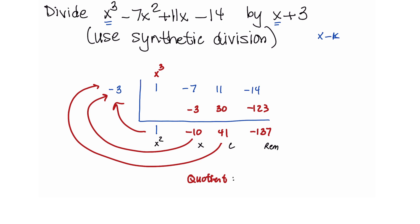So the quotient is x squared minus 10x plus 41. And then with remainder negative 137, which feels like a very large remainder, but that is indeed the remainder.